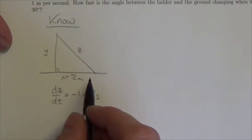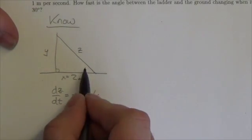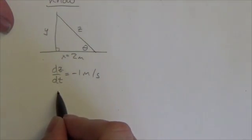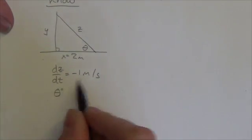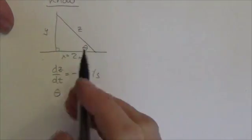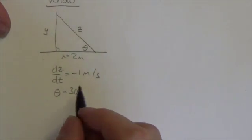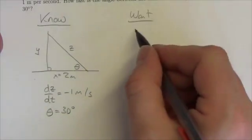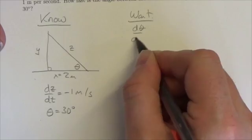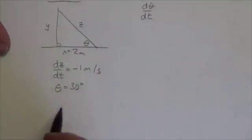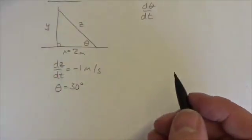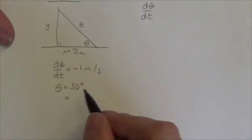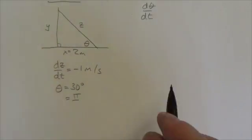We want to know how fast the angle between the ladder and the ground, well that's this angle right here, is changing. And we're going to give a specific angle here. When the angle here is 30 degrees, we're interested, what we want to know is how fast that angle is changing. But in calculus here, we're going to work in radians. So I'm going to convert that to radians and I know that that's going to be π over 6.